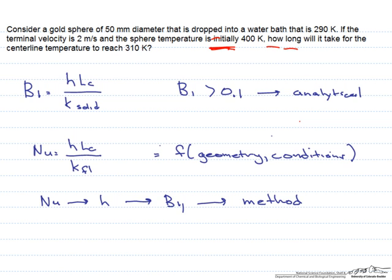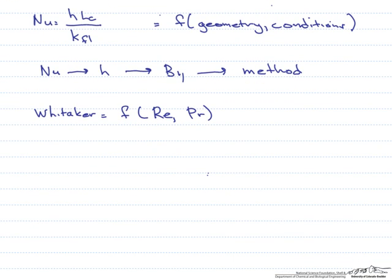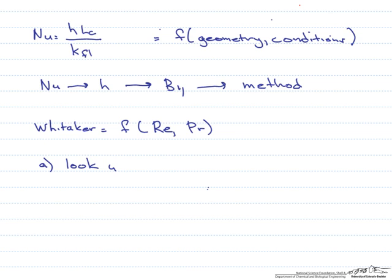For a sphere, there is only one correlation for the Nusselt number, which makes our life a little easier. This is the Whitaker correlation, which is a function of both the Reynolds number and the Prandtl number. The properties for this correlation are looked up at the temperature of the bath, or what we call T infinity.